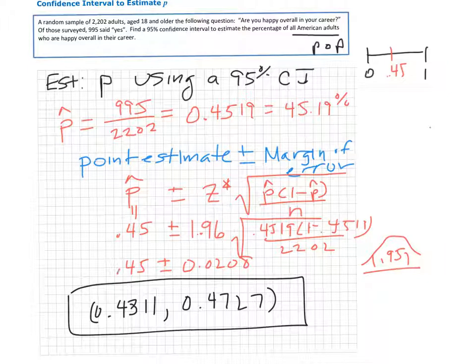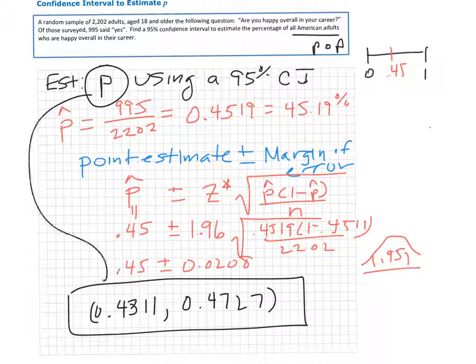To recap, what does it tell you? It's an estimate for your population proportion. We are 95% confident that the proportion of all American adults who are happy in their career is somewhere between 43% and 47%.